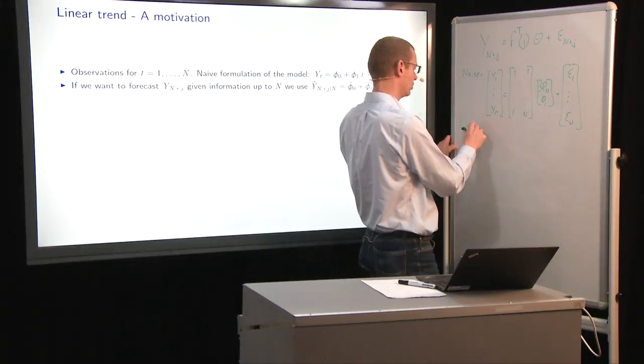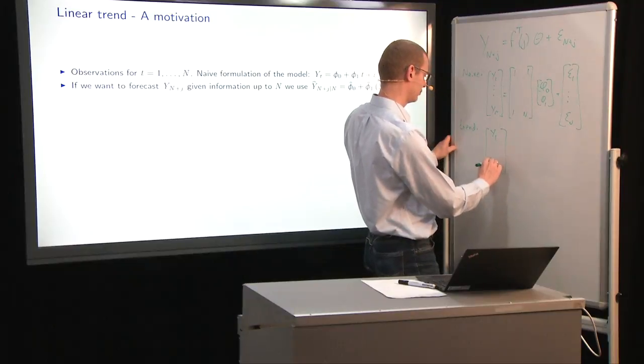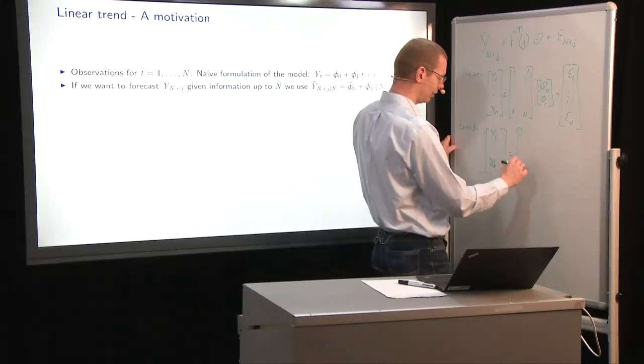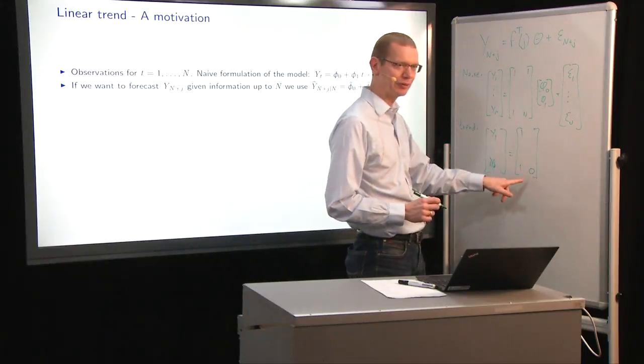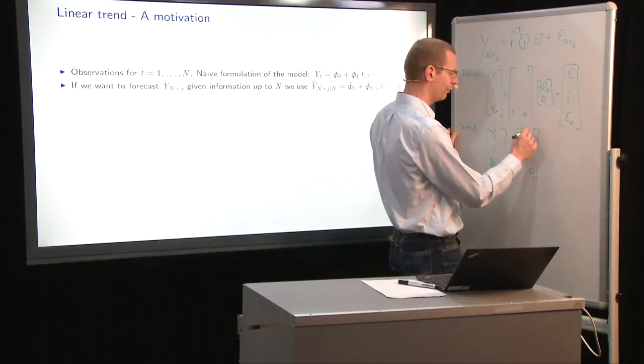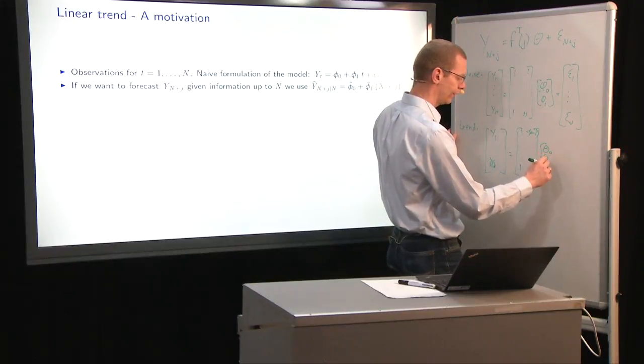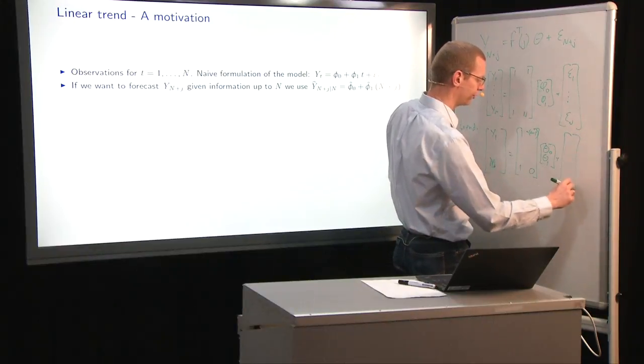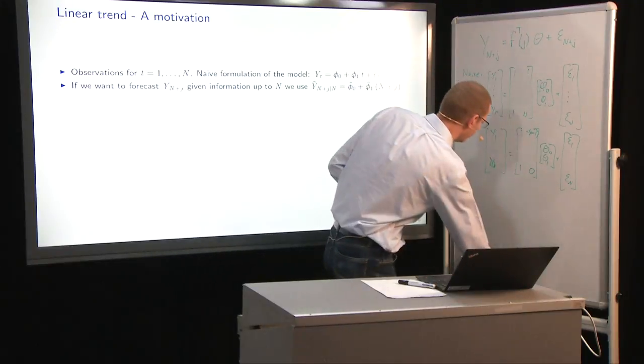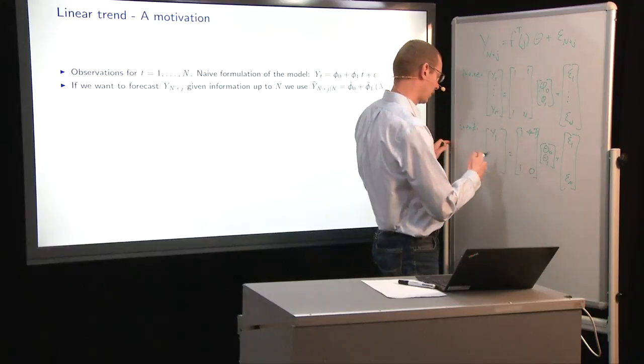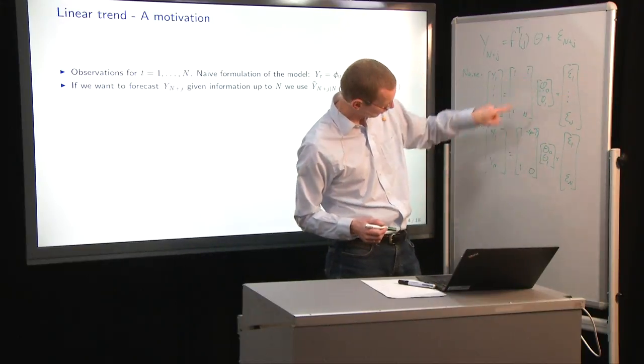If we do it with this formulation in the linear regression setting, then in the trend model setting, the observations are the same, y1 down to yn, and then what we have as a design matrix, again a column of ones to represent the mean value, but then we have time relative to the most recent observation. We have time difference 0 here at the end, and then we go all the way back, this is minus n minus 1 up here. And let's call these theta 0, theta 1, plus all the epsilons from epsilon 1 down to epsilon n. The two models are giving identical predictions.